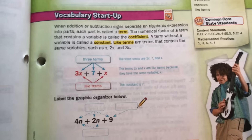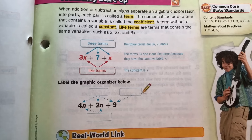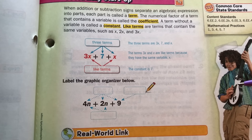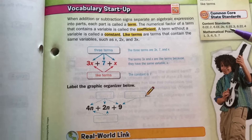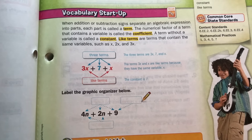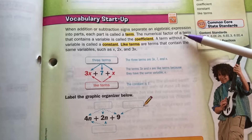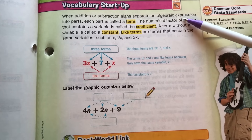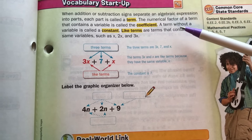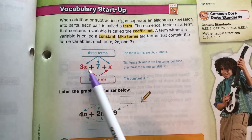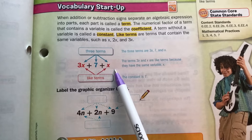There's some vocab here that we're going to be using later. We talk about it a bit in this chapter, but this is stuff you're going to be using in future math too, so it's not one of our main vocab words for the chapter. When addition or subtraction signs separate an algebraic expression into parts, each part is called a term — each part between operation signs is called a term.